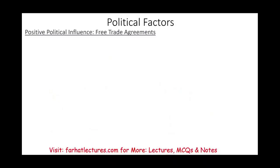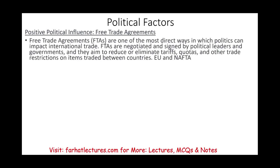Starting with political factors — there are positive and negative ones. Free trade agreements are one of the most direct ways in which politics can impact international trade. These agreements are negotiated and signed by political leaders and governments, and their goal is to reduce or eliminate tariffs, quotas, and other trade restrictions. Examples include the EU or the agreement between the US, Mexico, and Canada, formerly called NAFTA. When there's a free trade agreement between countries, it makes conducting international business much, much easier.